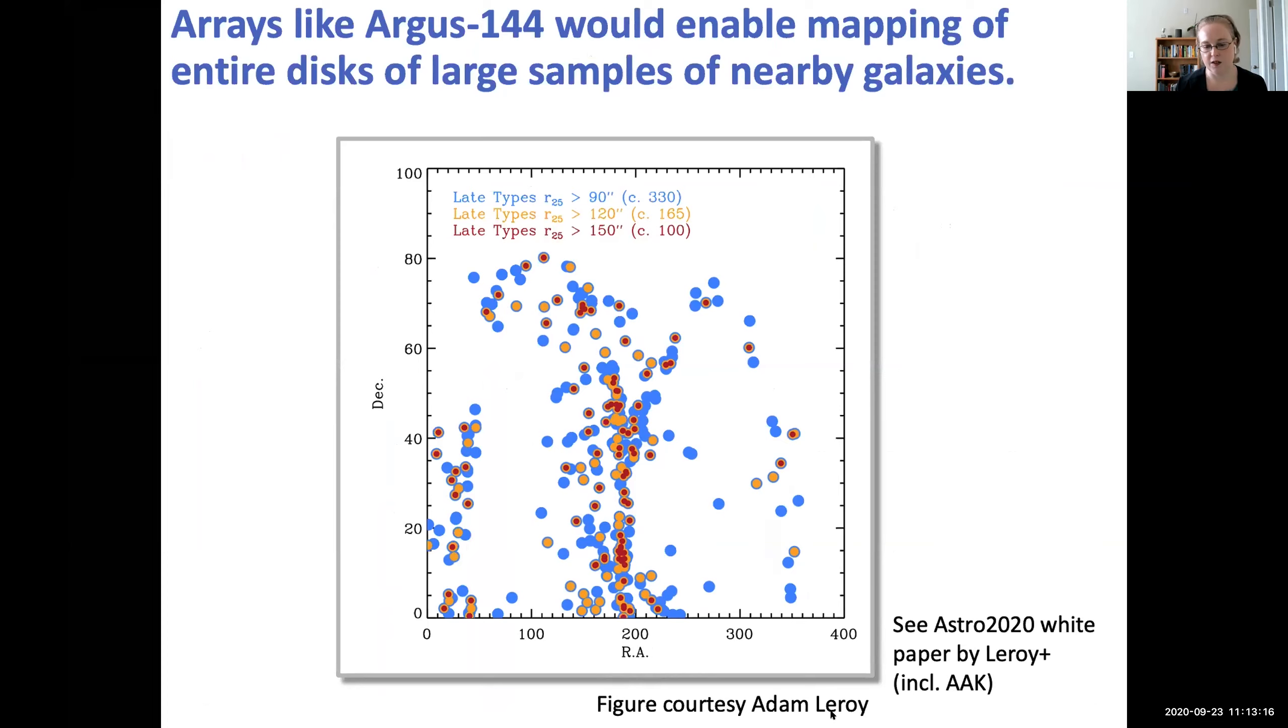And this is a figure that Adam created several years ago, but still relevant. And it shows the size of the galaxy in different colors. So the red is the biggest, about two and a half arc minutes. The next size down, the orange, is two arc minutes and then the blue is one and a half. So when you look at these numbers, we're talking a hundred to 165. And you look at the sizes, there are not a ton of really huge galaxies. So I think for a lot of the nearby galaxy work...